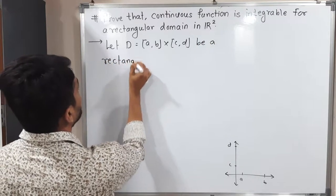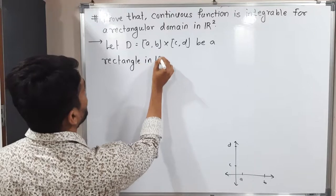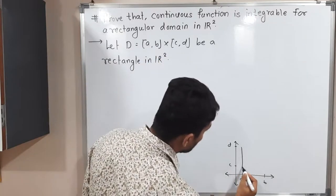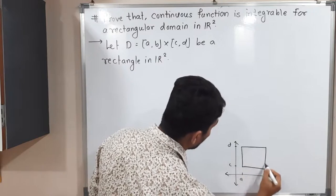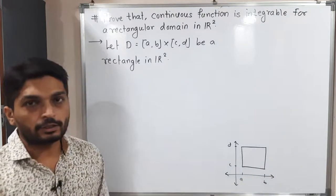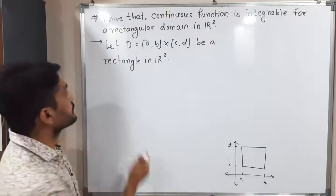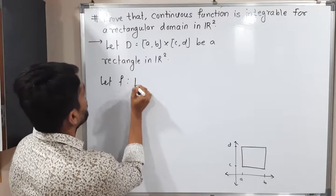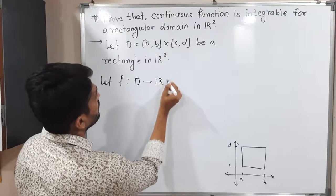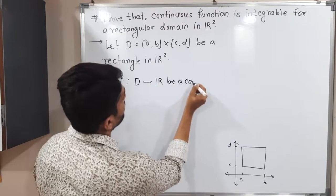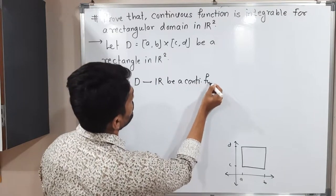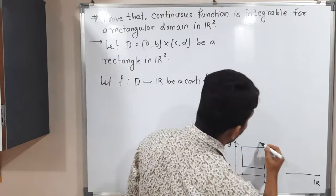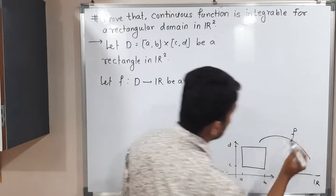We are considering a rectangle in R2. So we have AB cross CD giving this type of rectangle. And we have a continuous function — let F defined from D to R be a continuous function.